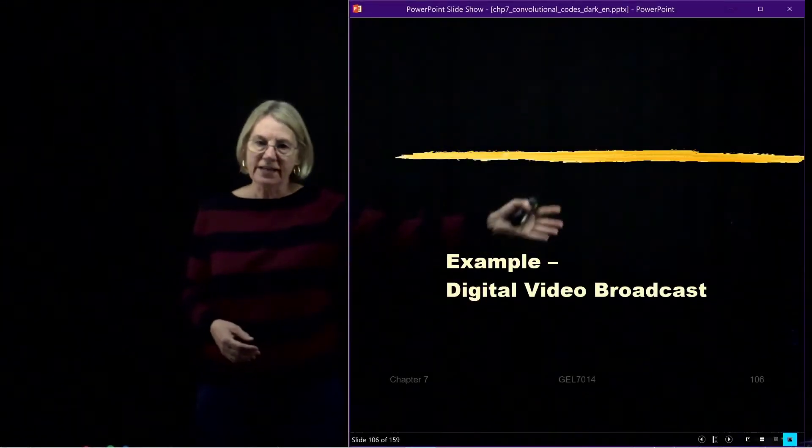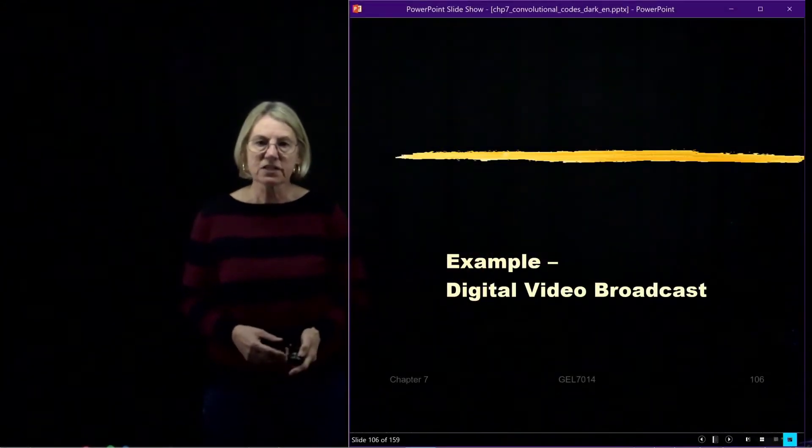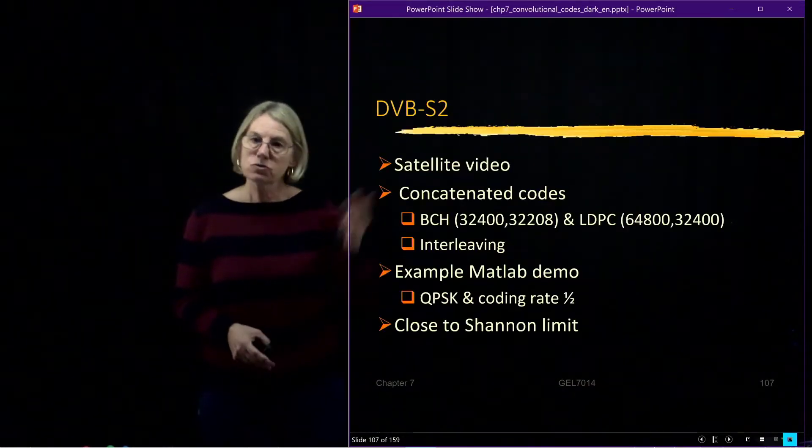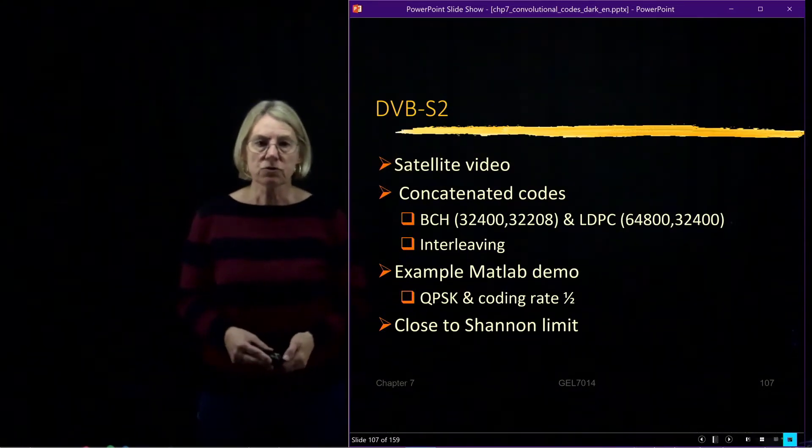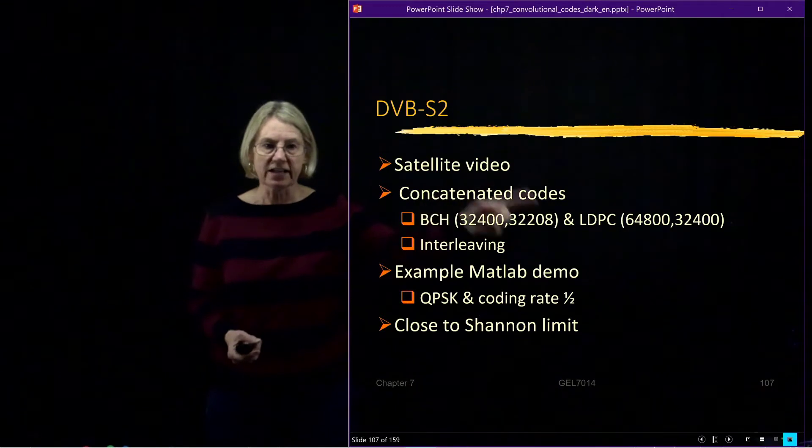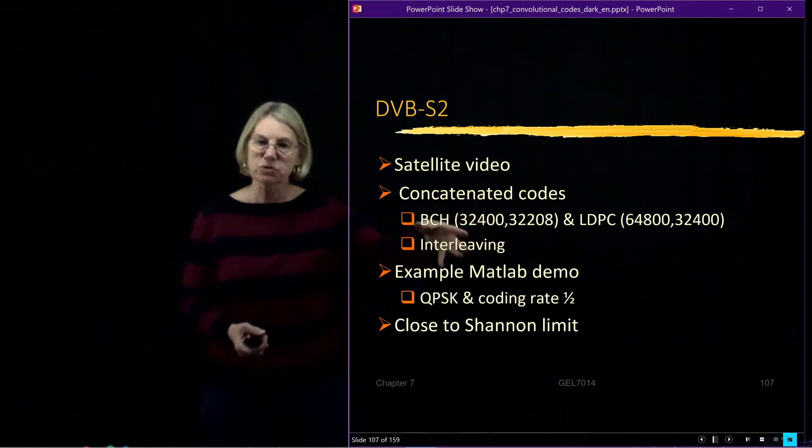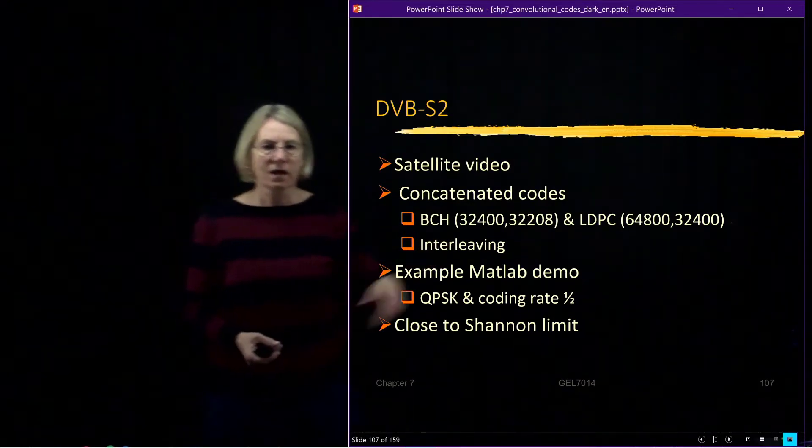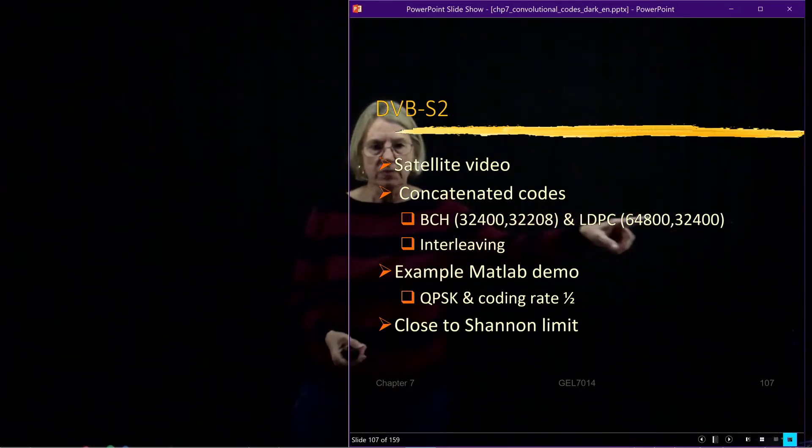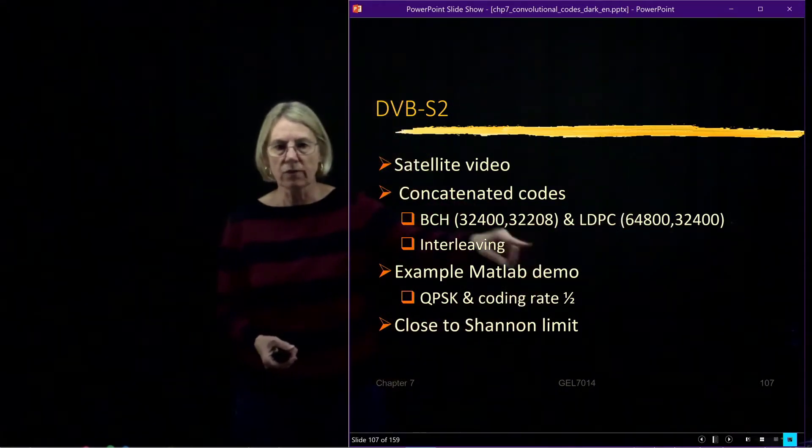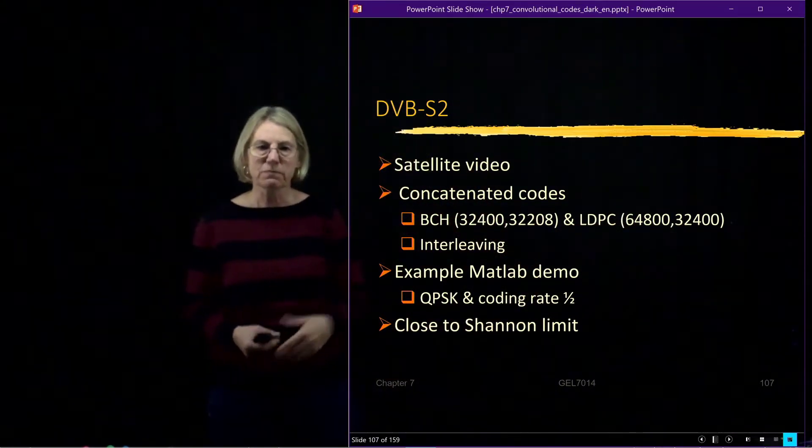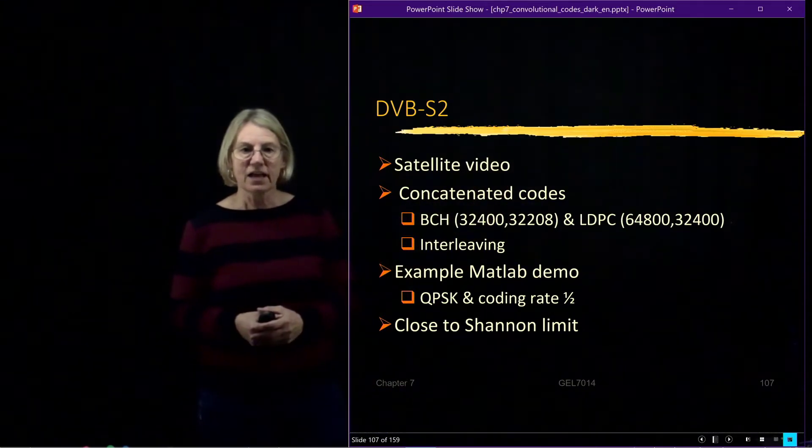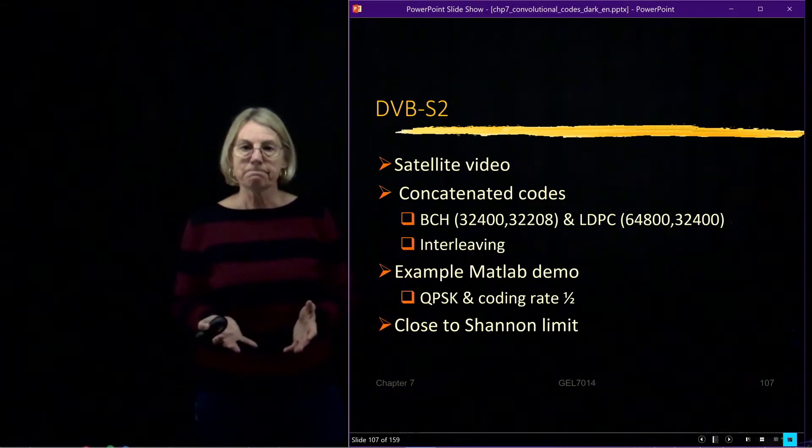I said it was a digital video broadcast, it's an IEEE standard, using some concatenated codes. It's used for satellite video. The two codes that are concatenated are a BCH code and an LDPC code, some very large block codes. A block before and after encoding, so we can see this is a one-half, and this is a very low rate code, so very low addition.